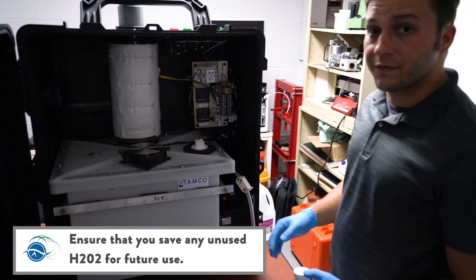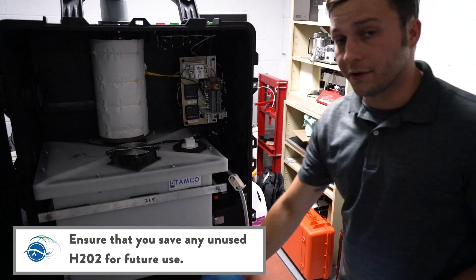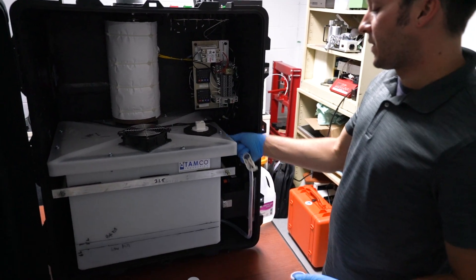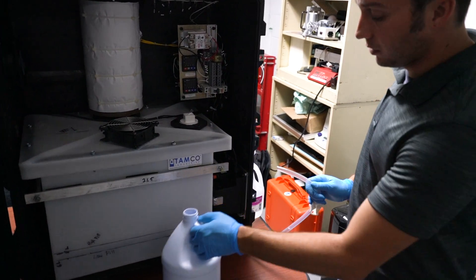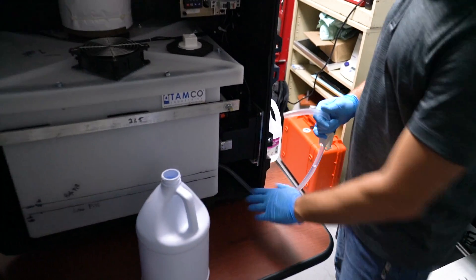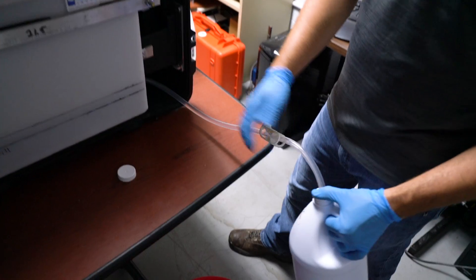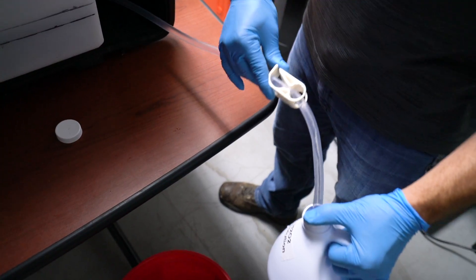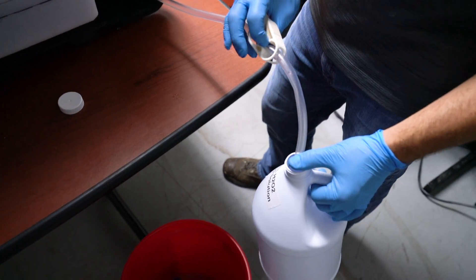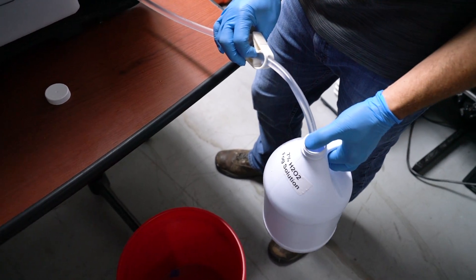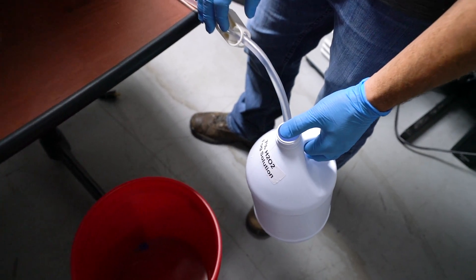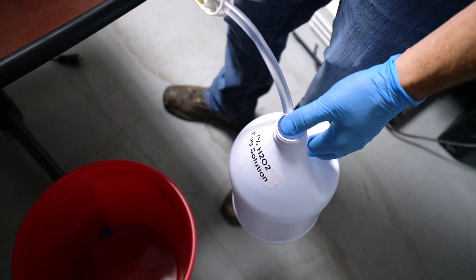At the end of each disinfection procedure, you want to drain the solution from the reservoir tank. To do so, you will locate the drain hose on the right hand side of the reservoir tank and disengage the safety clip from the hose. Direct the solution into an appropriate container. This solution can be reused at another point.